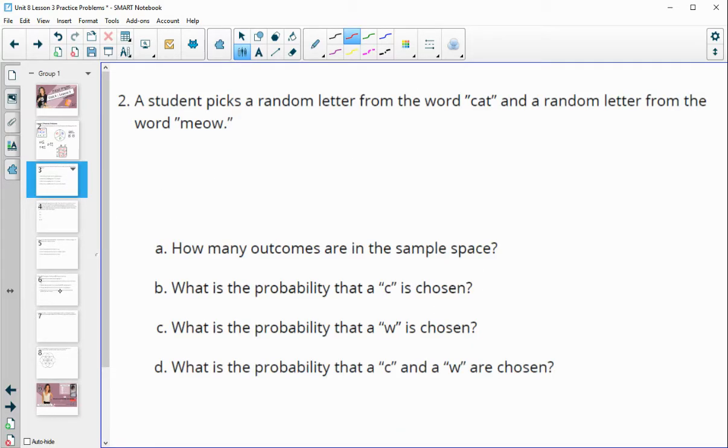Number two, a student picks a random letter from the word cat and a random letter from the word meow. How many outcomes are possible in this sample space? So you could actually write out the sample space. So if I chose C, then I could have chosen M, E, O, or W next.